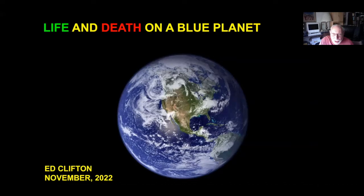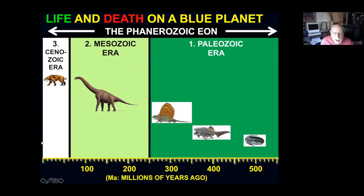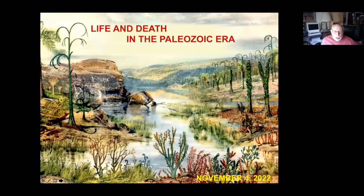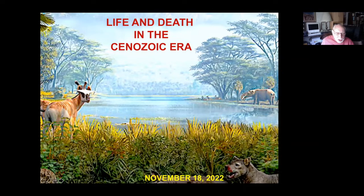What we're going to do this morning is the first of a series of three talks on life and death on a blue planet, which of course is planet Earth. Geologists divide the Earth's history up into four large eons, the most recent of which is the Phanerozoic, and the Phanerozoic is the one we'll be talking about in this presentation. It is further divided into four eras, the oldest being the Paleozoic, the Mesozoic, and the youngest — the one we're in today — is the Cenozoic.